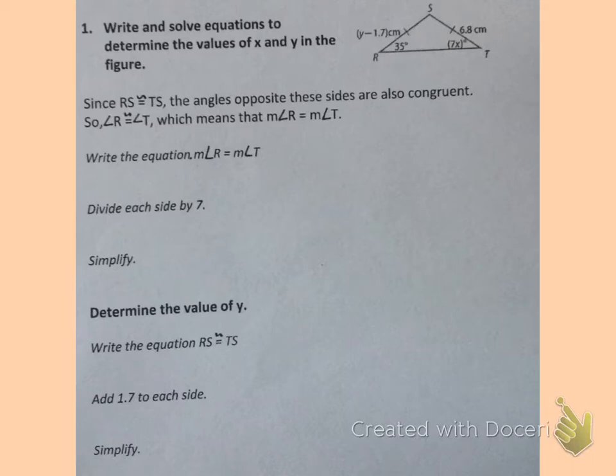Since side RS is congruent to side TS, and we can tell this because of those little tick marks right there, that also means the angles opposite those sides are congruent. So angle R is congruent to angle T, which means the measurement of angle R equals the measurement of angle T.